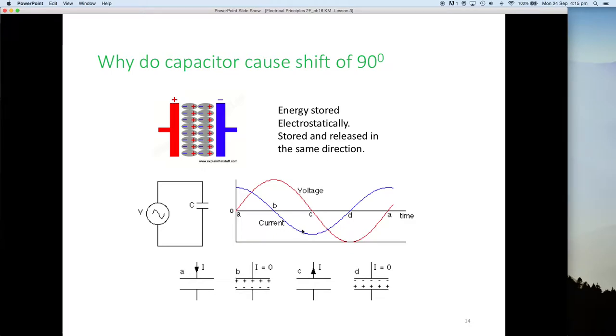Then it stores current in the opposite direction, in the negative direction, and feeds that current back in. So both sides of the cycle, both positive and negative, you can see here drawn on these capacitors. The capacitor is storing energy both in the positive half of the cycle and the negative half of the cycle, and then feeding it back in.